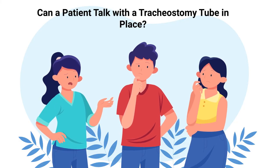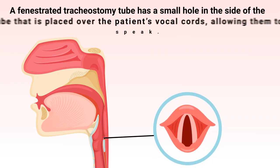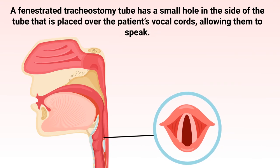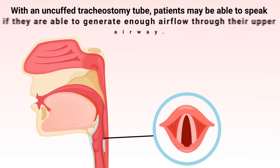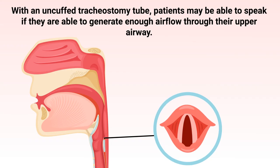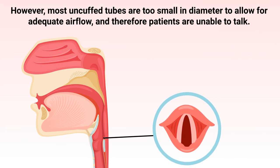Whether or not a patient can talk with the tracheostomy tube in place depends on the type of tube being used. A fenestrated tracheostomy tube has a small hole in the side that is placed over the patient's vocal cords, which allows them to speak. With an uncuffed tracheostomy tube, patients may be able to speak if they can generate enough airflow through their upper airway.